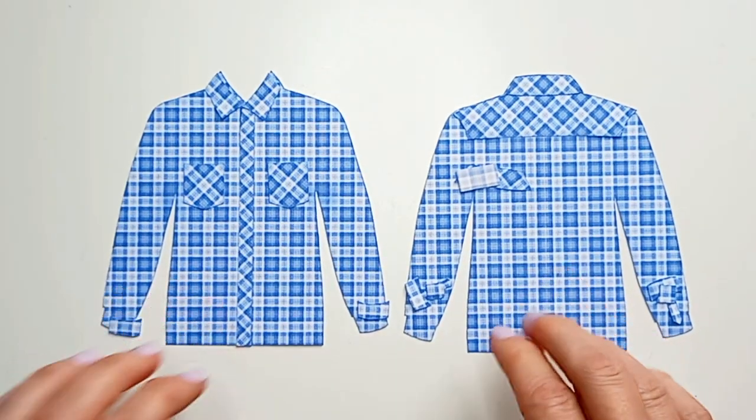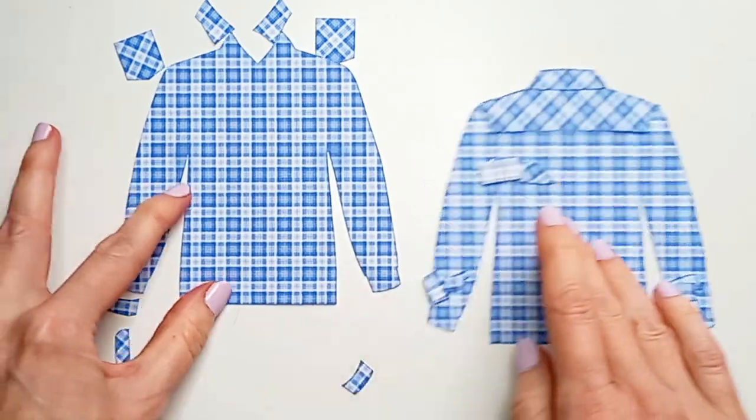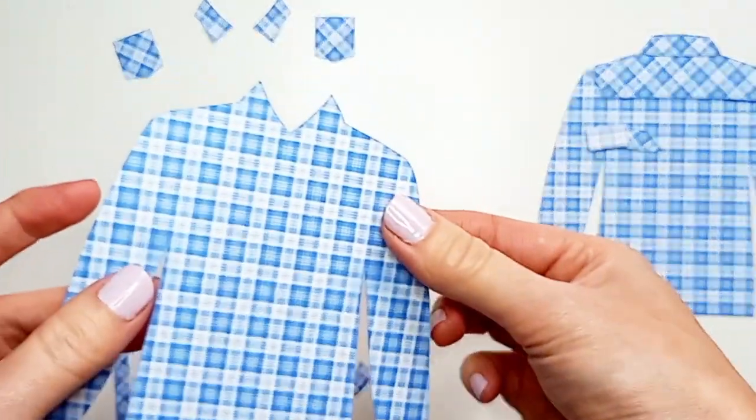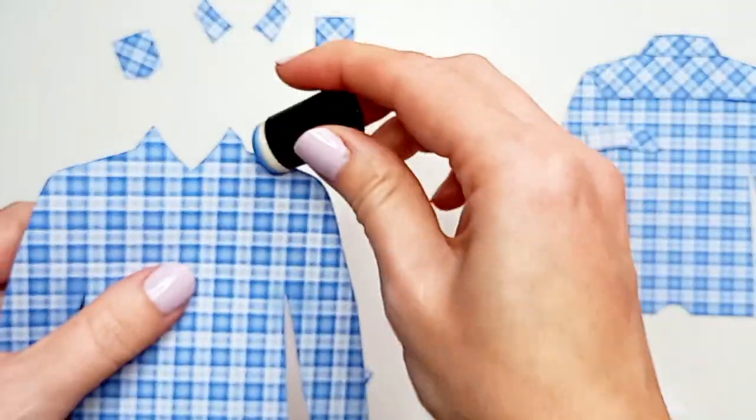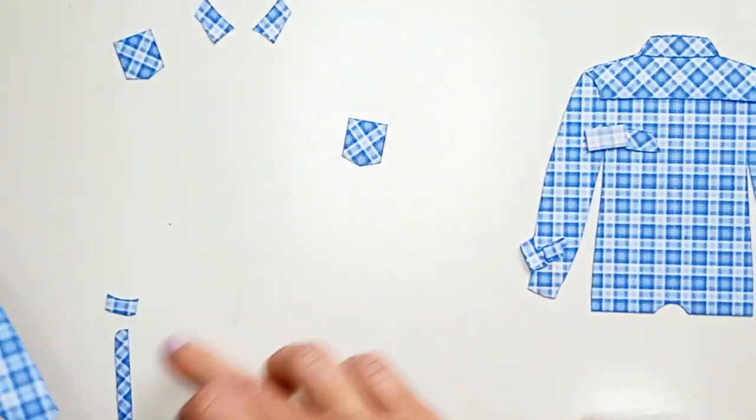Okay, so now you need to start working on the shirt pieces. Now I've already gone ahead and inked around all of the edges of all of the pieces just with a blue ink to match the shirt.